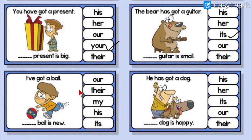I have got a ball — dash ball is new. I have got it, so whose ball? My ball. I have got a ball — my ball is new. He has got a dog — dash dog is happy. He has got the dog, so the dog is his. His dog is happy. So today we complete up till here — we learned about possessive adjectives and demonstrative adjectives and did some fun exercises.